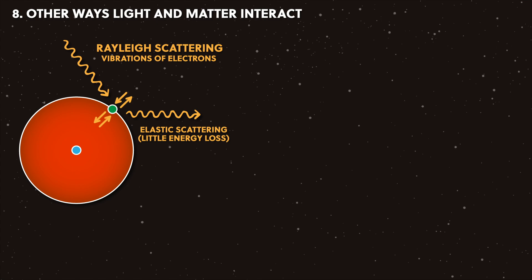They then become an oscillating source of more electromagnetic waves which radiate out in all directions. This scattering is what causes the blue color of the sky and the red color of sunsets. It's also why metals are very reflective, because they have lots of free electrons that move around very easily.